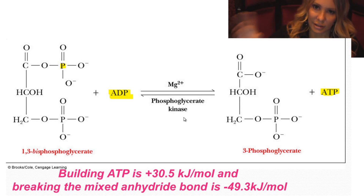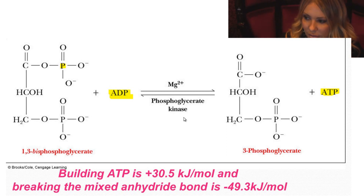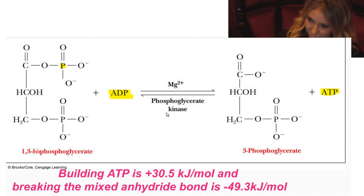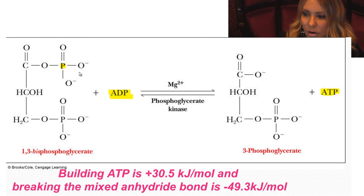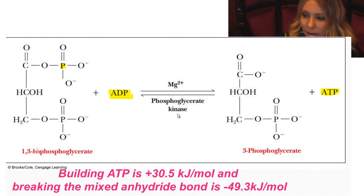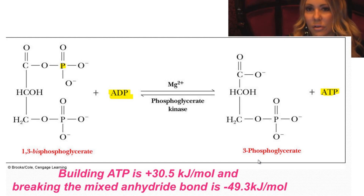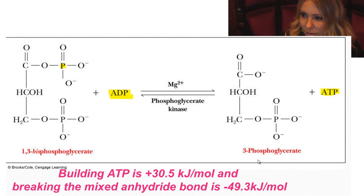A kinase puts a phosphate on to something else, whereas a phosphatase will take it off. So we're losing the phosphate from carbon number one and creating ATP. Magnesium is going to be a cofactor. Our product is 3-phosphoglycerate — from each glucose molecule, we're going to have two molecules of 3-phosphoglycerate.